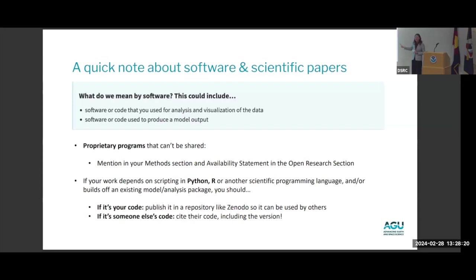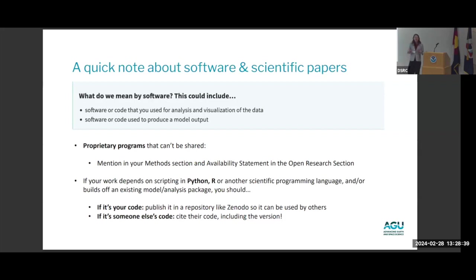What do we mean by software? You can share the software or code used for analysis and visualization of data, or software used to produce model output. If you use a proprietary program you can't share, just mention it in your open research section so people know where to access it. If your work depends on Python or R scripting, or if you're building off an existing package, either cite it if it's someone else's package or make sure it's open and accessible if it's your own — and make sure that credit and attribution is there.